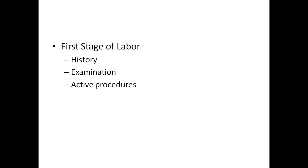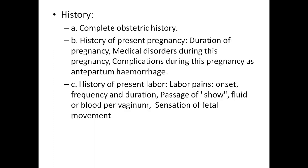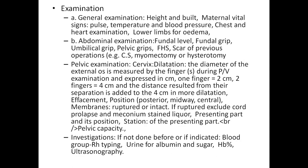The first stage involves three things: history, examination, and active procedures. History includes complete obstetric history, history of present pregnancy including duration of pregnancy, medical disorders, complications such as antepartum hemorrhage or any medical disease. History of present labor includes labor pain onset, frequency and duration, passage of liquor fluid or blood per vagina, and sensation of fetal movements.